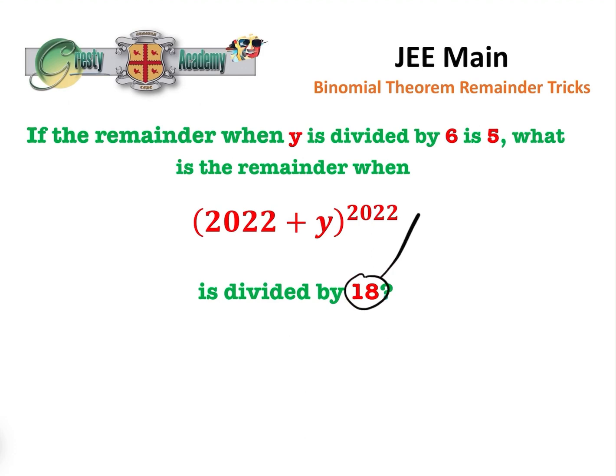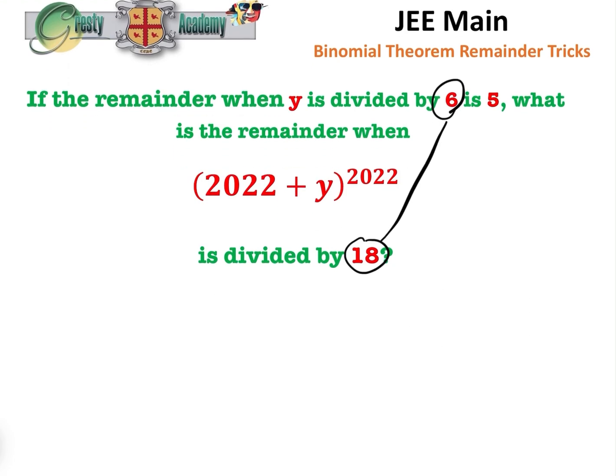Now, it's no coincidence that 18 and 6 - 6 is a factor of 18, and we'll see that later. But basically, clearly what we have to do first is express y = 6l + 5, where l is some integer. So we can now put that into our expression here. So we've got (2022 + 6l + 5)^2022.